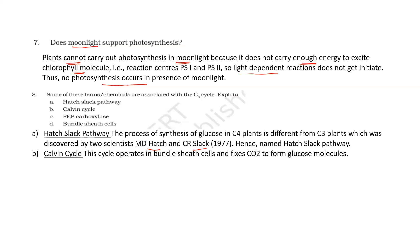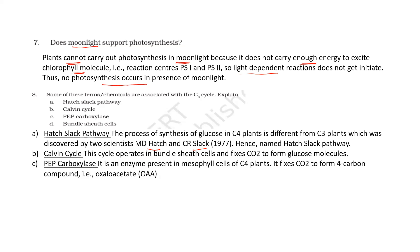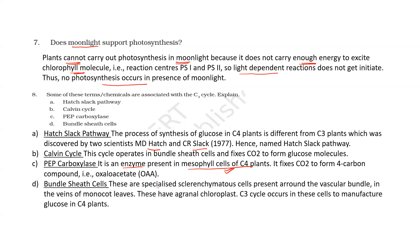The Calvin cycle is the process by which carbon dioxide is reduced to form glucose. All photosynthetic plants — whether C3, C4, or CAM plants — use the Calvin cycle to prepare sugar. PEP carboxylase is the enzyme that catalyzes the reaction in C4 and CAM plants, where PEP accepts carbon dioxide. This enzyme is present in the mesophyll cells of C4 plants. Bundle sheath cells are specialized sclerenchyma cells present around the vascular bundle with agrana chloroplasts, and the C3 cycle occurs here in C4 plants.